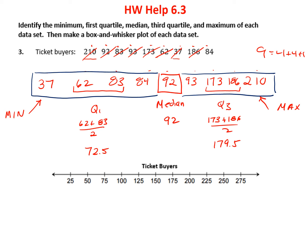Let's mark them all down. Minimum 37, about here. My maximum is 210, about here. My median is 92. My quartile 1 is 72.5, about there. And 179.5, about there. I usually start with the box from quartile 1 to quartile 3. My median is the number that splits the box into two boxes. Then my whiskers. And there we have it.